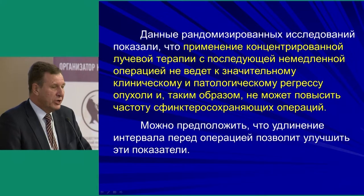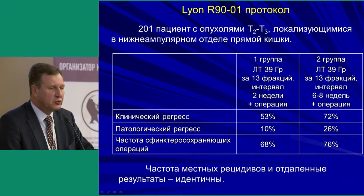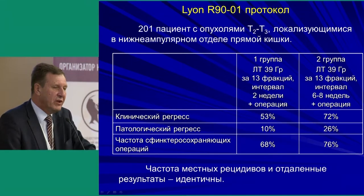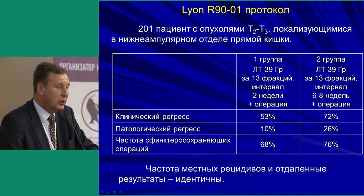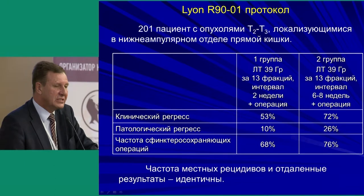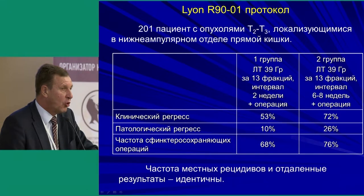We can assume that elongation of the pre-operative interval might improve outcomes. A study using the Lyon protocol with more than 200 patients with T2–T3 tumors of the low rectal ampulla showed that in the immediate intervention group clinical regression was 53%, whereas with an elongated pre-op interval it reached 72%. Pathological regression was 10% with immediate intervention and 26% after an elongated pre-op period.